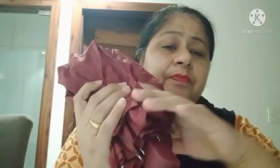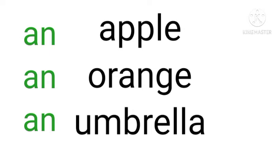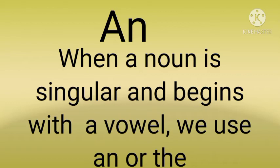Now see the examples of 'an': an apple, an orange, an umbrella. The apple is red in color. Here the words written in green color are the articles. When a noun is singular and begins with a vowel, we use 'an' and 'the.'